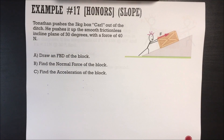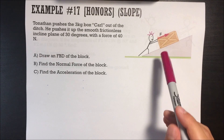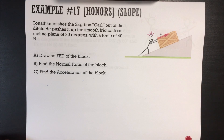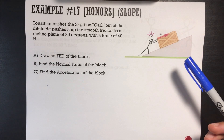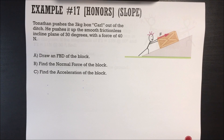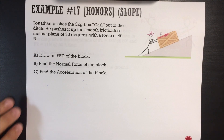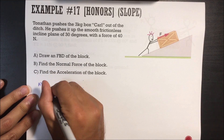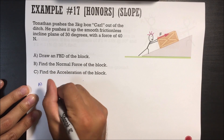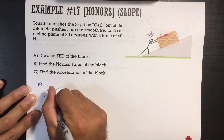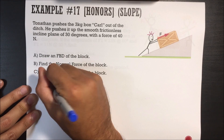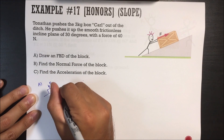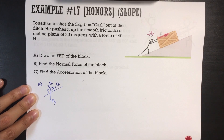Tonathan pushes the 3kg box Carl out of the ditch. He pushes it up the smooth frictionless incline plane of 30 degrees with a force of 40 newtons. Draw a free body diagram. This is similar and maybe a little bit harder. Force of gravity is always going straight down, the normal force is always going perpendicular to the plane, but now there's also a force applied going up the incline.